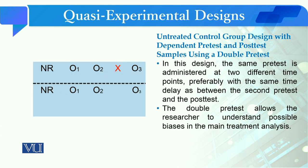The second design is that you have two pre-test readings. The same pre-test is administered at two different time points, preferably with the same time delay as between the second pre-test and the post-test. You have one experimental group and another control group, and you have two pre-tests in this framework, with sufficient time interval between them.